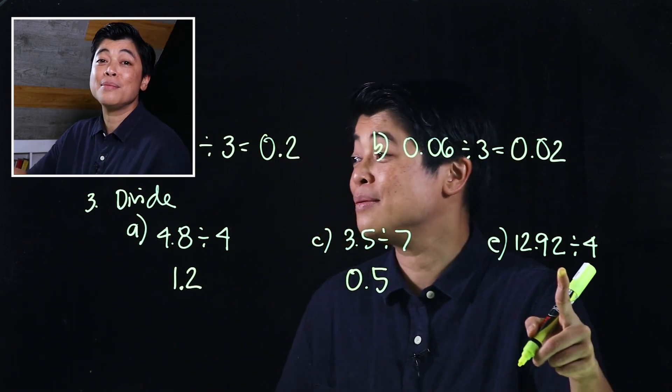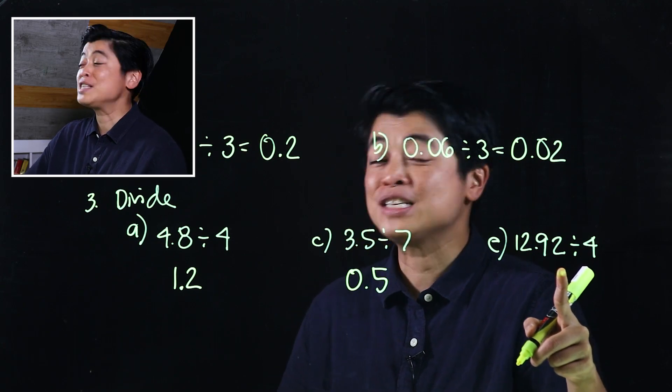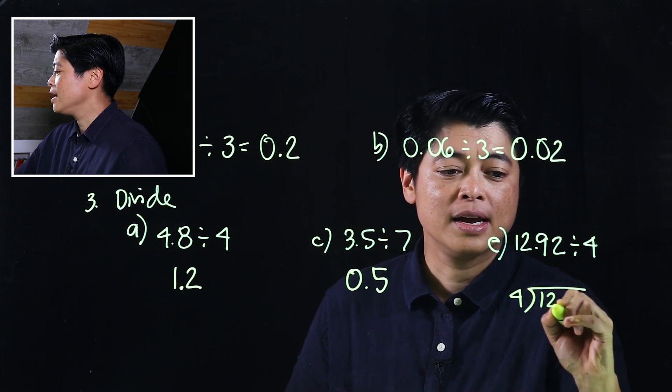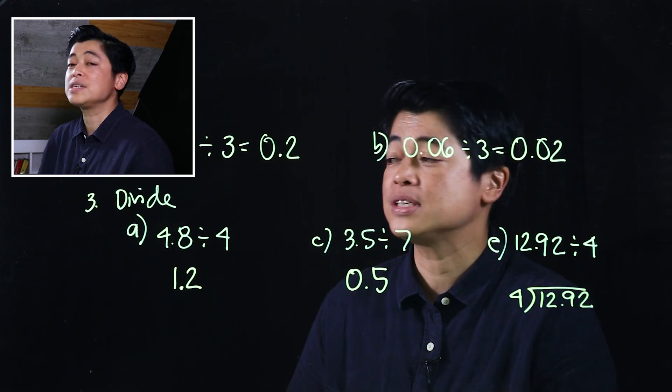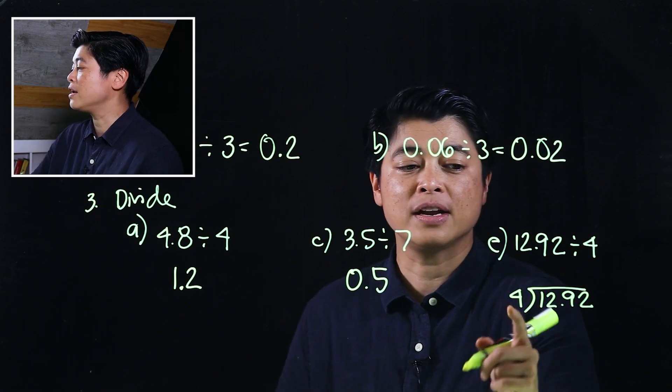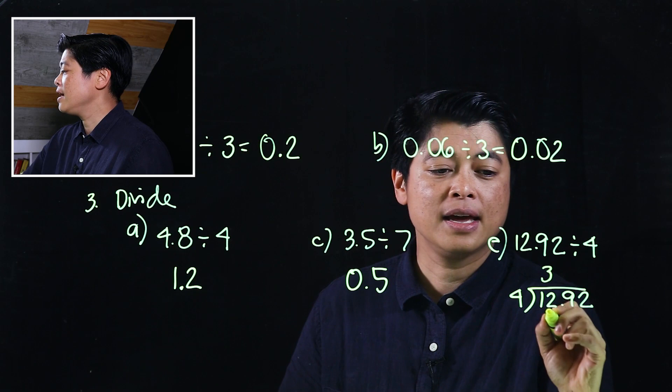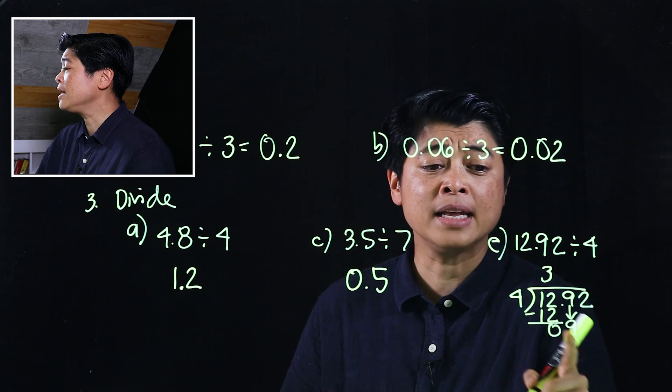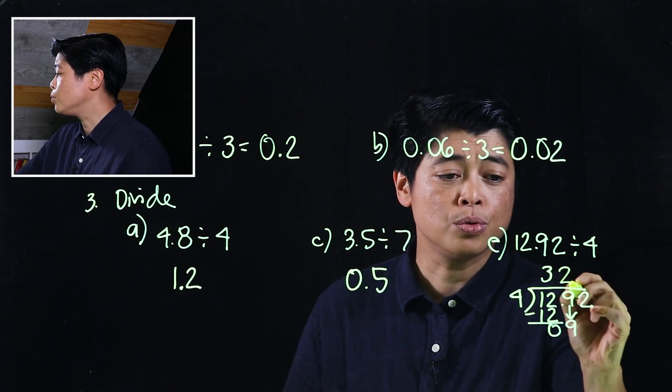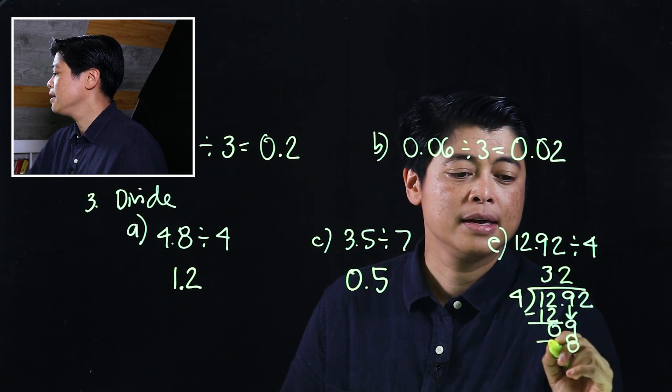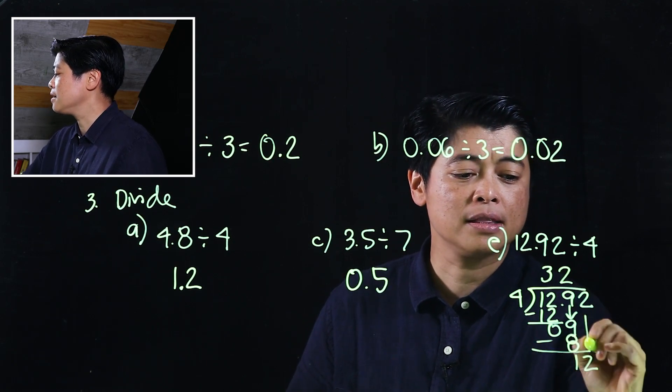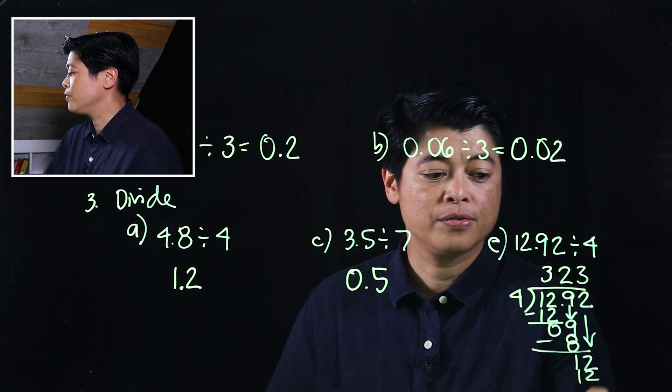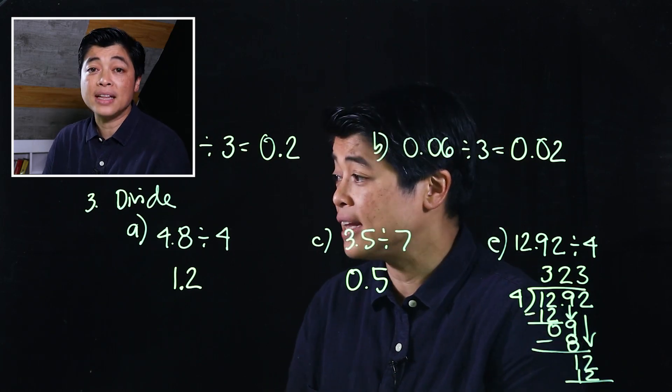However, for the last one, it's a little bit more challenging, so which means I'm going to do computational division. This is 4 and 12.92 goes inside. If we divide, 12 divided by 4 is 3, and then this is 12. We subtract, then we bring down 9 divided by 4 is 2. Then we multiply, we subtract. That would make it 12. 12 divided would be 3, which makes it 12, which means that is fully divided already.